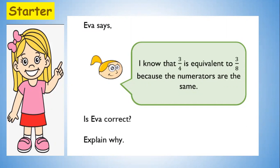So this is a girl named Eva. She says I know that three-fourths or three-quarters is equivalent to three-eighths because the numerators are the same. Do you think she's correct? Do we find equivalency of fractions when the numerators are same? I think that is incorrect. Why?